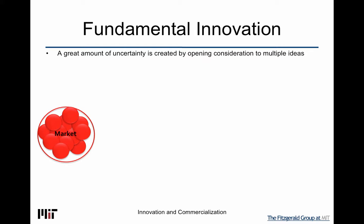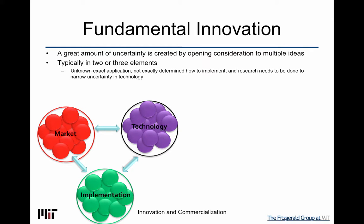Based on what we've been talking about in the incremental phase and looking at our model, it's clear that we're going to have to introduce a great amount of uncertainty into multiple elements in order to create the most fundamental of all innovations. At least two, but oftentimes three elements are opened up in a generic way. That means uncertainty, and you have to have resources that let these things interact and decrease over time.